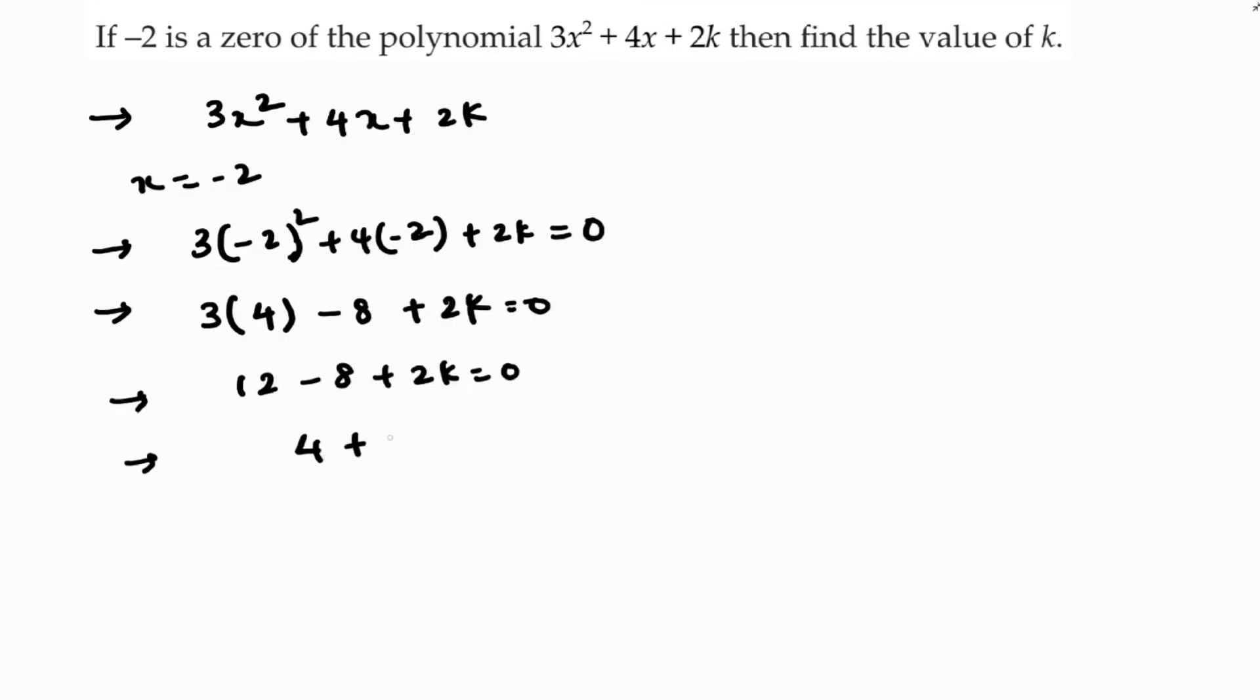12 minus 8 is 4. 4 plus 2k equals 0. So 2k equals minus 4.